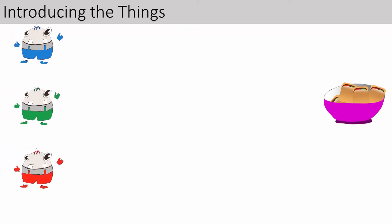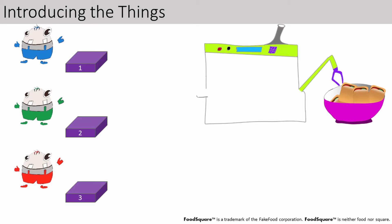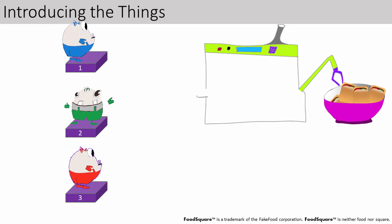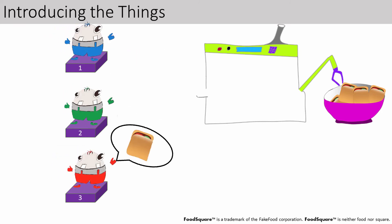My things share a bowl of food squares. And in order for them to share their food fairly, I have placed it under the control of an arbiter. When it's time to eat, each thing goes onto a platform and screams. In response, the arbiter grants them food in some order.